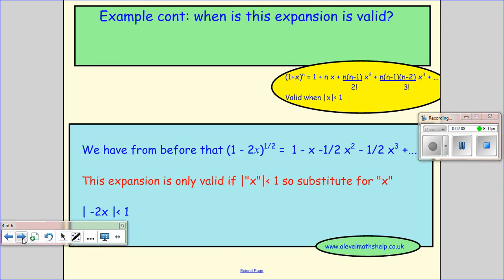The second bit. When is the expansion valid? The expansion is only valid if the x here, the modulus of x is smaller than 1. So rx is their x, so it's only valid if the modulus of minus 2x is smaller than 1.